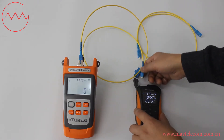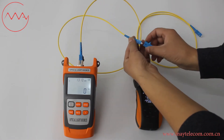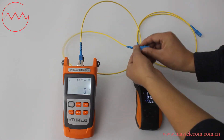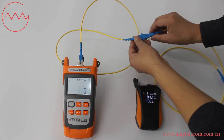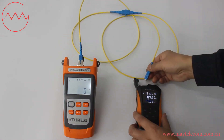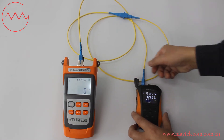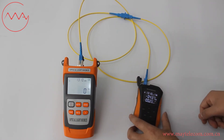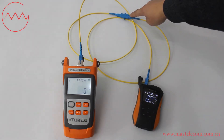Take out the SC connector from the OPM and connect it with the SC adapter and the patch code under test. The insertion loss of this connector is 0.21 dB.